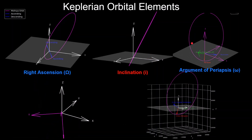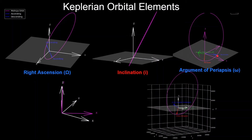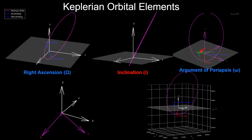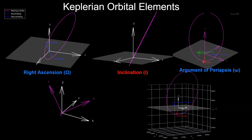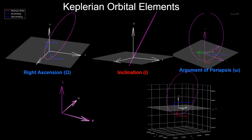Then we get to the argument of periapsis, which is defined as the angle from the vector pointing to the ascending node to the periapsis point — which is why it's called the argument of periapsis. This angle goes from the vector pointing to the ascending node all the way around to the periapsis point. It is a rotation about the body z-axis, which is also the angular momentum vector of the orbit.